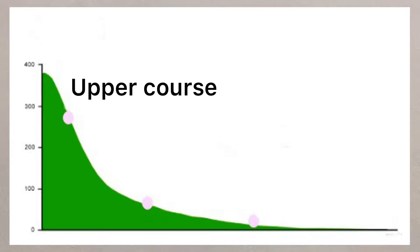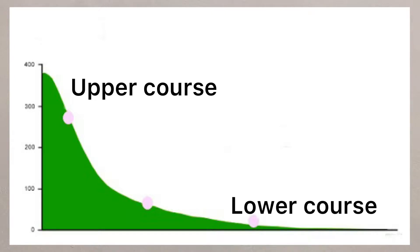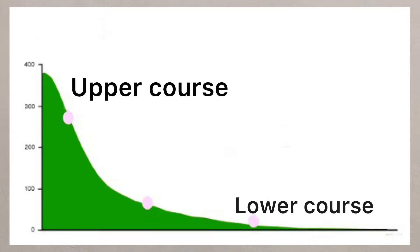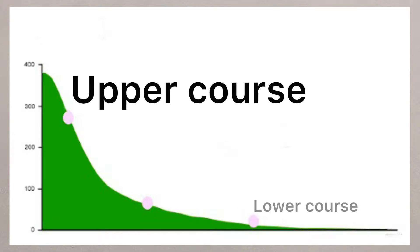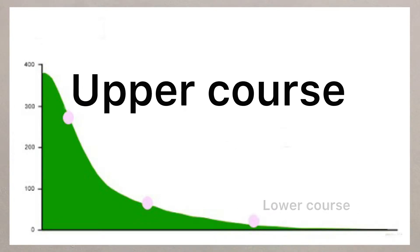Moving from the upper course to the lower course along the river's long profile, we can see a number of different landforms. We're going to focus on the upper course and the landforms created through erosion.